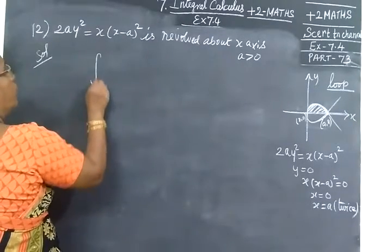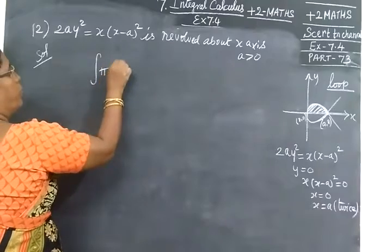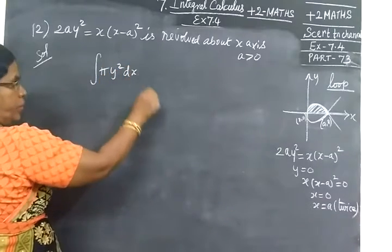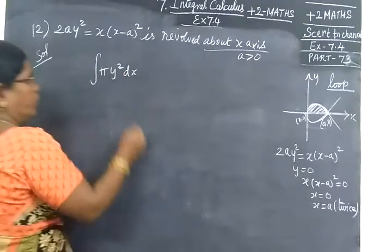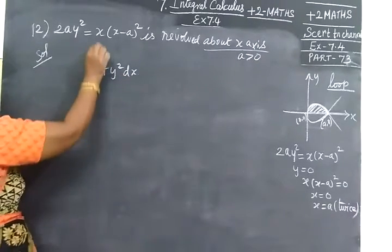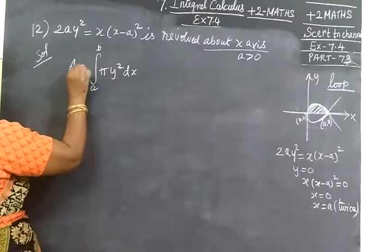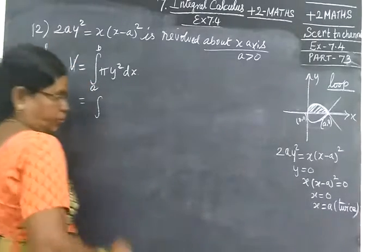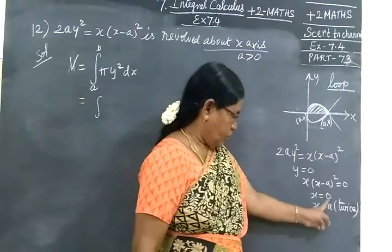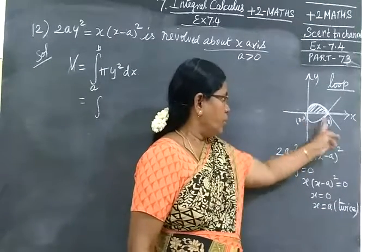Volume formula, π y² dx. With respect to x-axis, we go. π y² dx, integrate A to B. So now limit, we should be 0 to A. 0 to A.